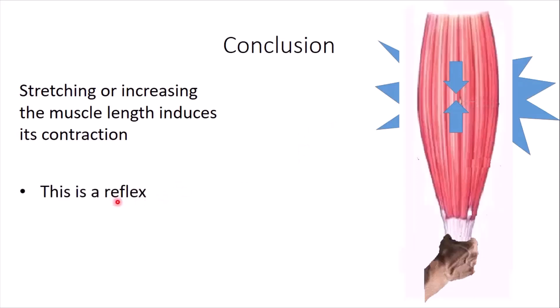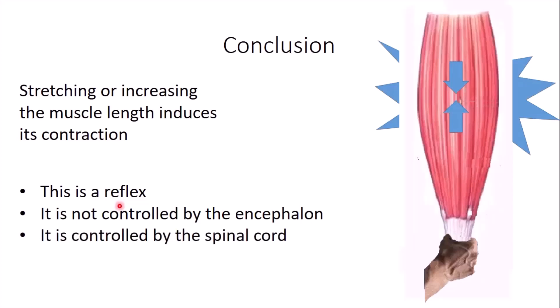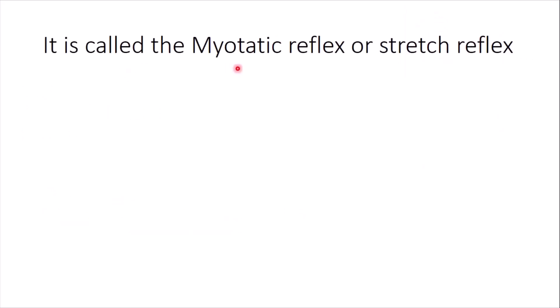So this is actually a reflex, an involuntary response. It is not controlled by the encephalon because the cat on which Sherrington was performing the experiment had its spinal cord isolated from the brain by an incision, by a cut. So it is in fact controlled by the spinal cord. This is referred to as the myotatic reflex. Myo means muscle. Or the stretch reflex.